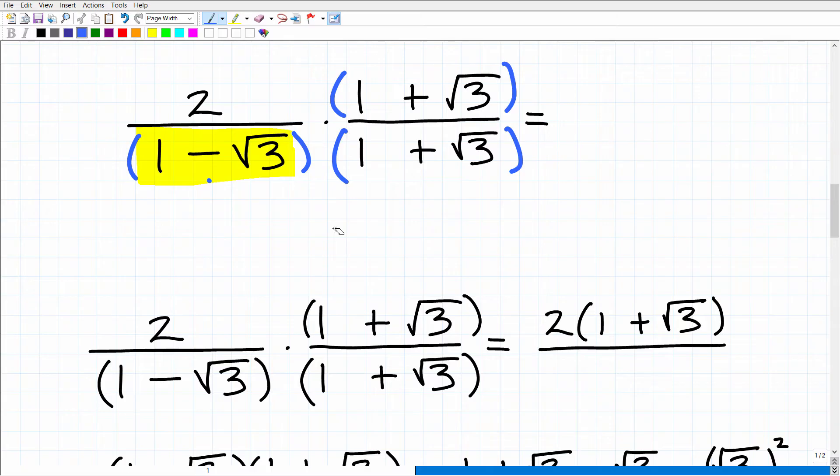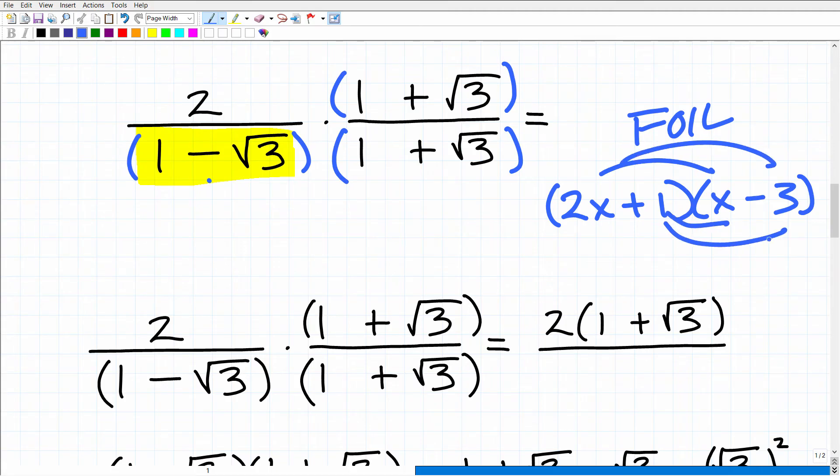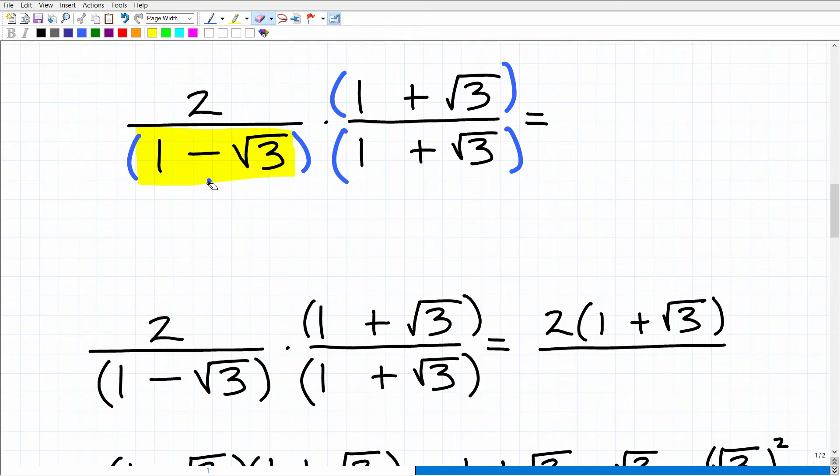Now, before we go any further here, you need to know how to deal with multiplication of these binomials. So just as a quick review, if I gave you this problem, 2x plus 1 times x minus 3, one binomial times another binomial, could you do this? Hopefully, you're thinking about the FOIL method: first, outer, inner, last. And if you are, then you are on the right track. And that's what you want to do here. You want to use the FOIL method to find the product here. You'll actually just use the distributive property. But let's go ahead and get into this right now.